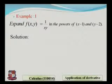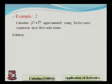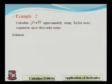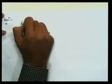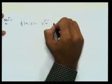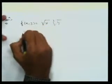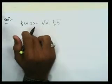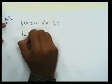Let us see one more example: calculate √17 × ∛7 approximately using Taylor series expansion up to the first order term. We have to apply the Taylor series up to first order terms, which means we only need to find fx and fy.